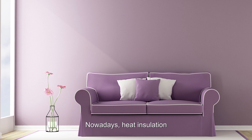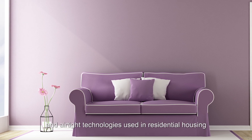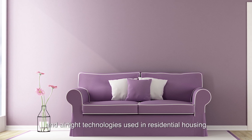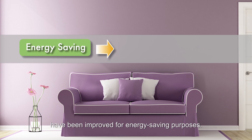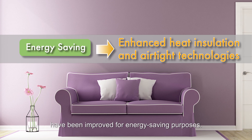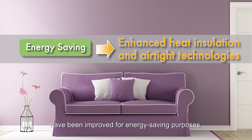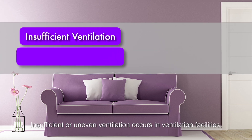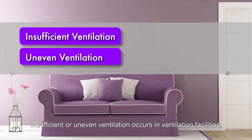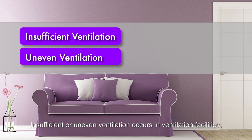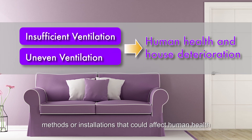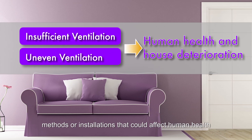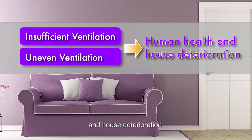Nowadays, heat insulation and airtight technologies used in residential housing have been improved for energy-saving purposes. Insufficient or uneven ventilation occurs in ventilation facilities, methods or installations that could affect human health and house deterioration.